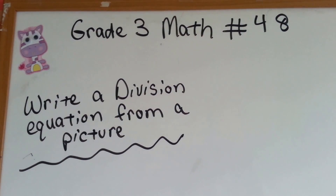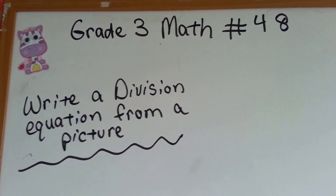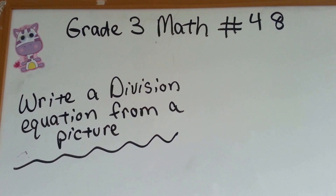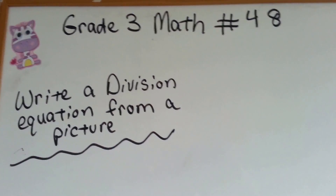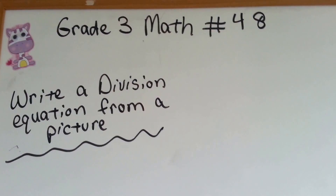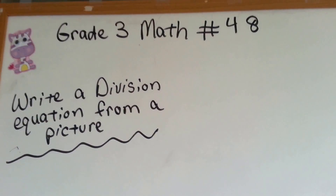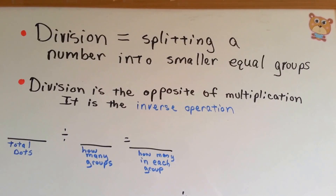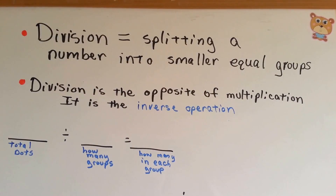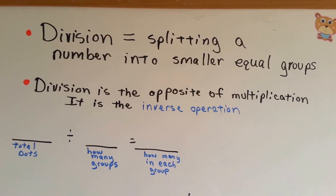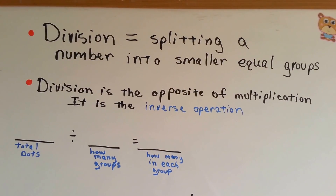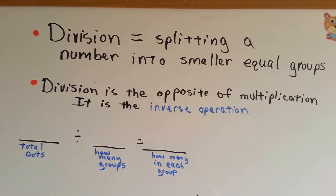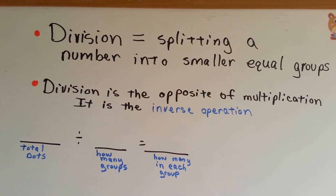Grade 3 math, number 48: Write a division equation from a picture. In the last couple of videos, we discussed what division is, so let's go over that one more time. Division is splitting a number into smaller equal groups. It's the opposite of multiplication — it's called the inverse operation because it's the opposite.